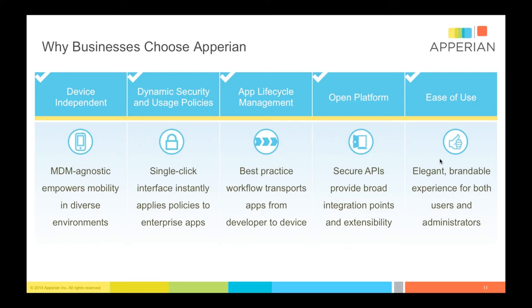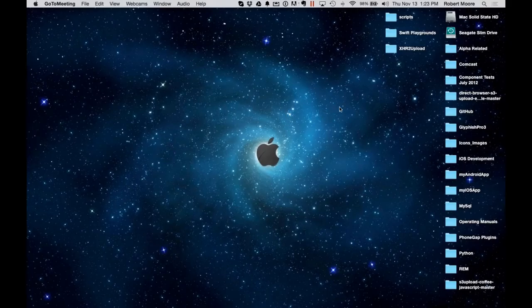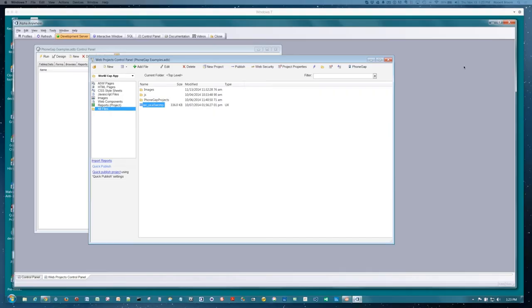Our next presenter is Bob Moore. Bob, I noticed you're on mute — please take yourself off mute. All right, let's see if we can get this thing to fly. I have multiple screens. Can you now see my Alpha? I'm looking at the Alpha Anywhere. Perfect. So what I'm going to do is bring you through the integration of Appirian and show you how we implemented that.